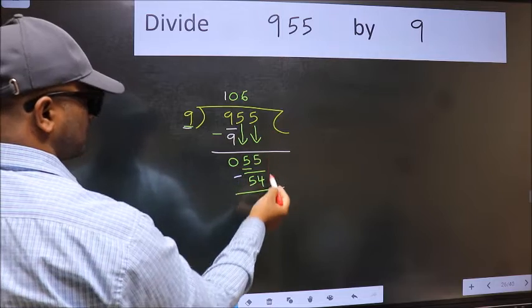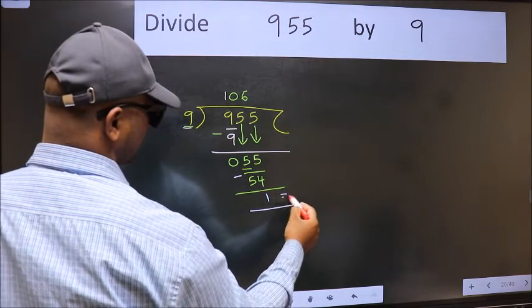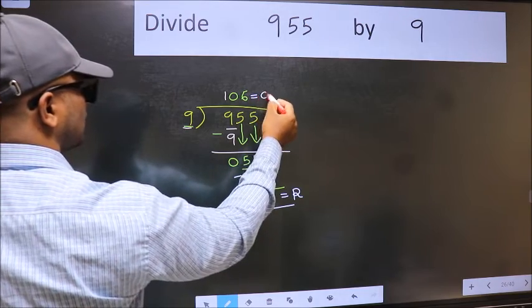No more numbers to bring it down. So we stop here. This is our remainder and this is our quotient.